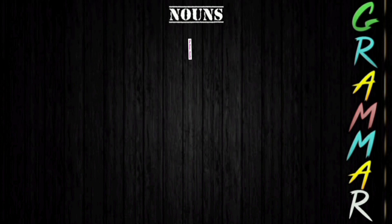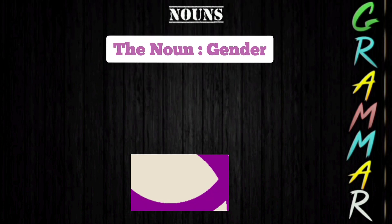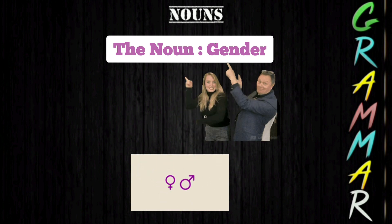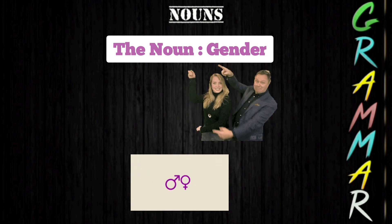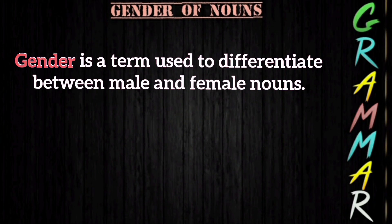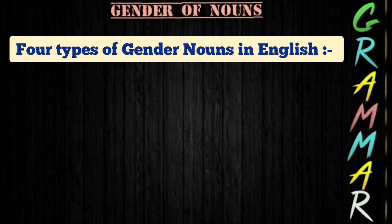Next topic about nouns is noun gender. You know that living beings are either male or female. Gender is a term used to differentiate between male and female nouns. Based on that, there are four types of gender nouns.